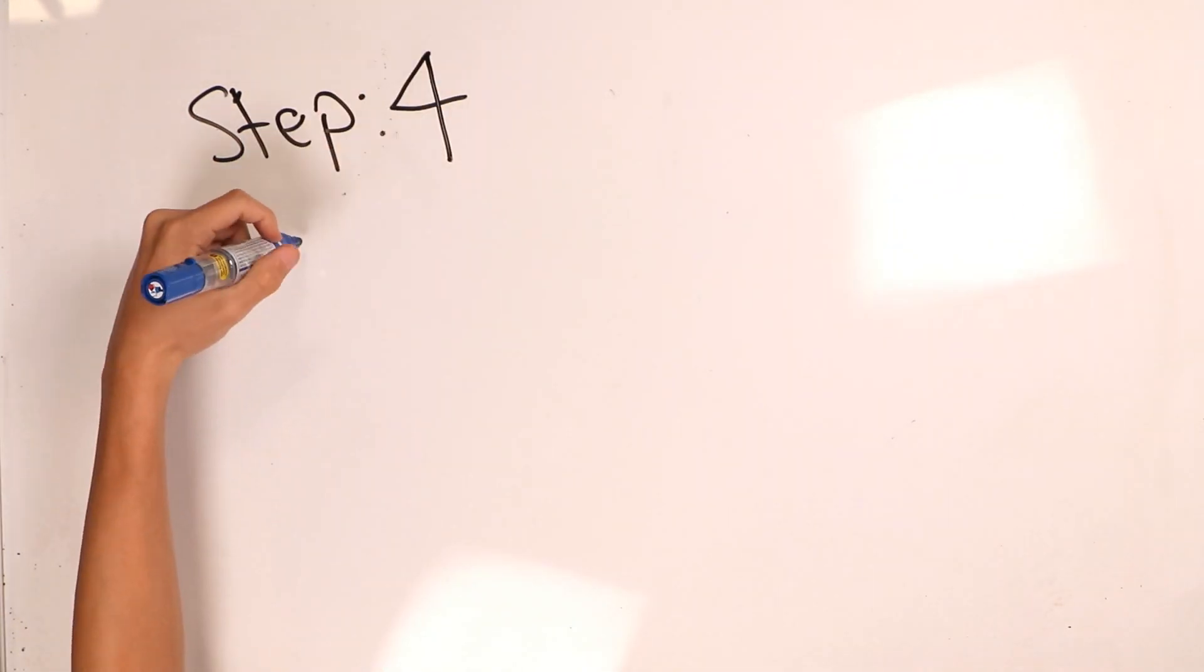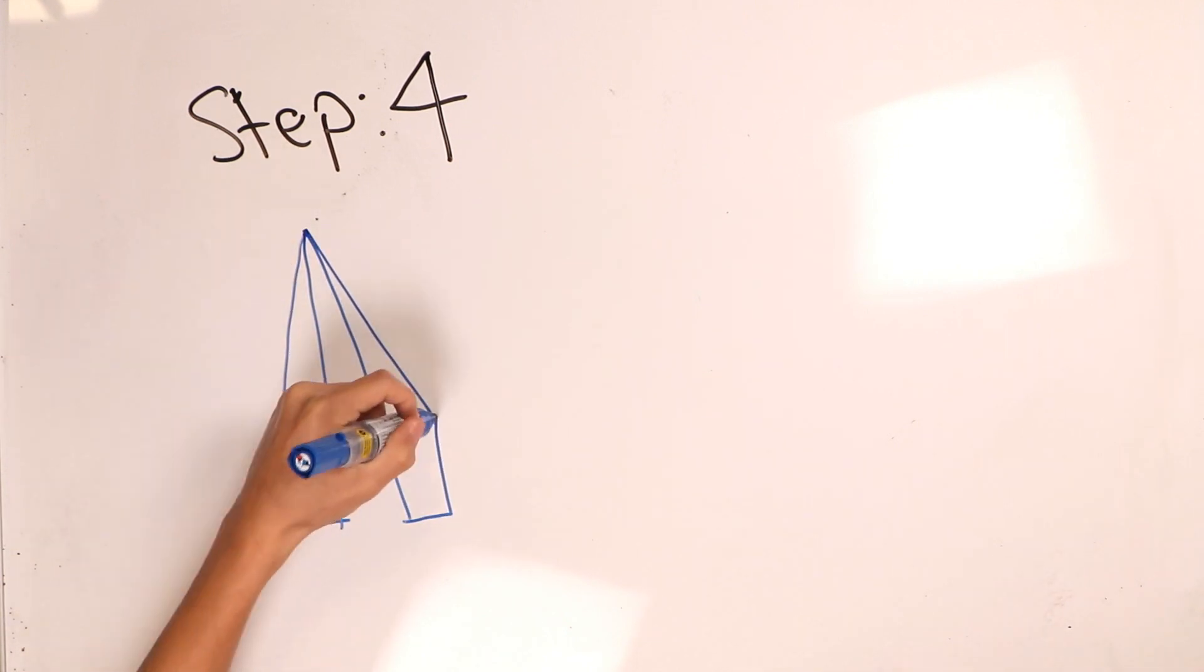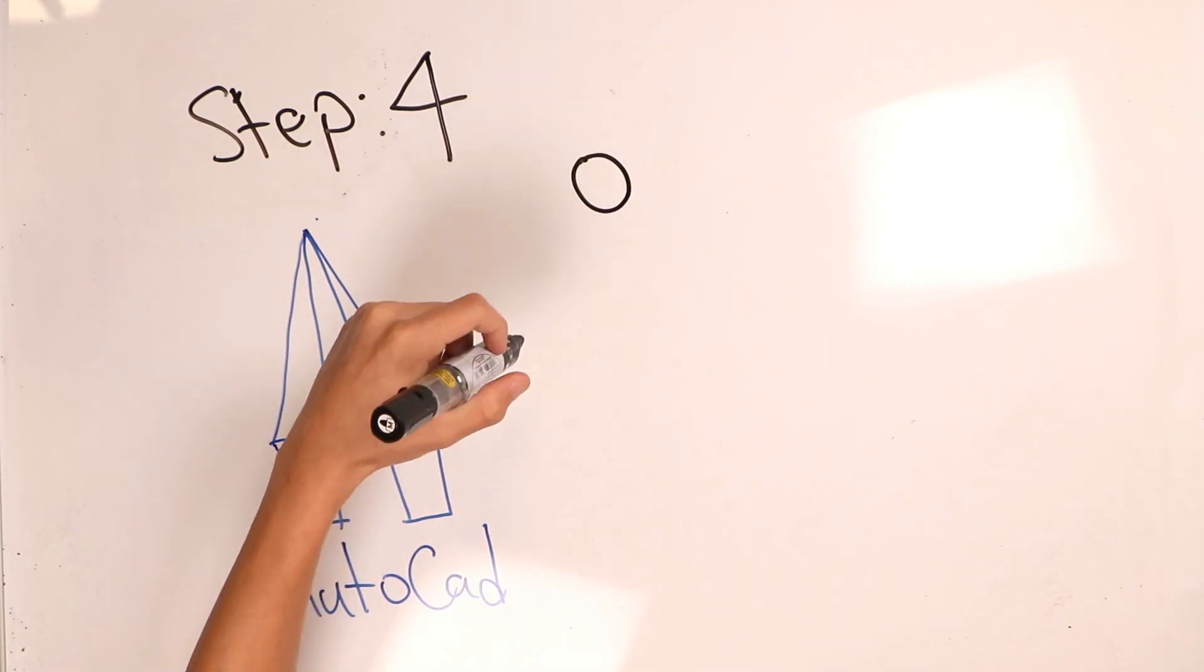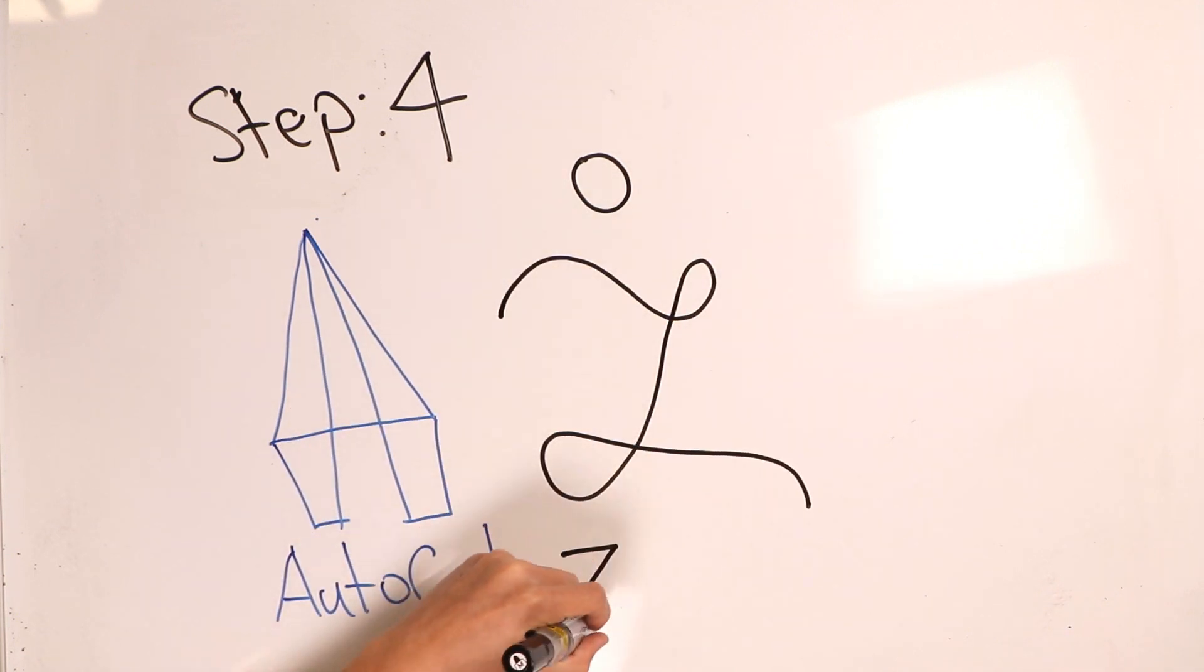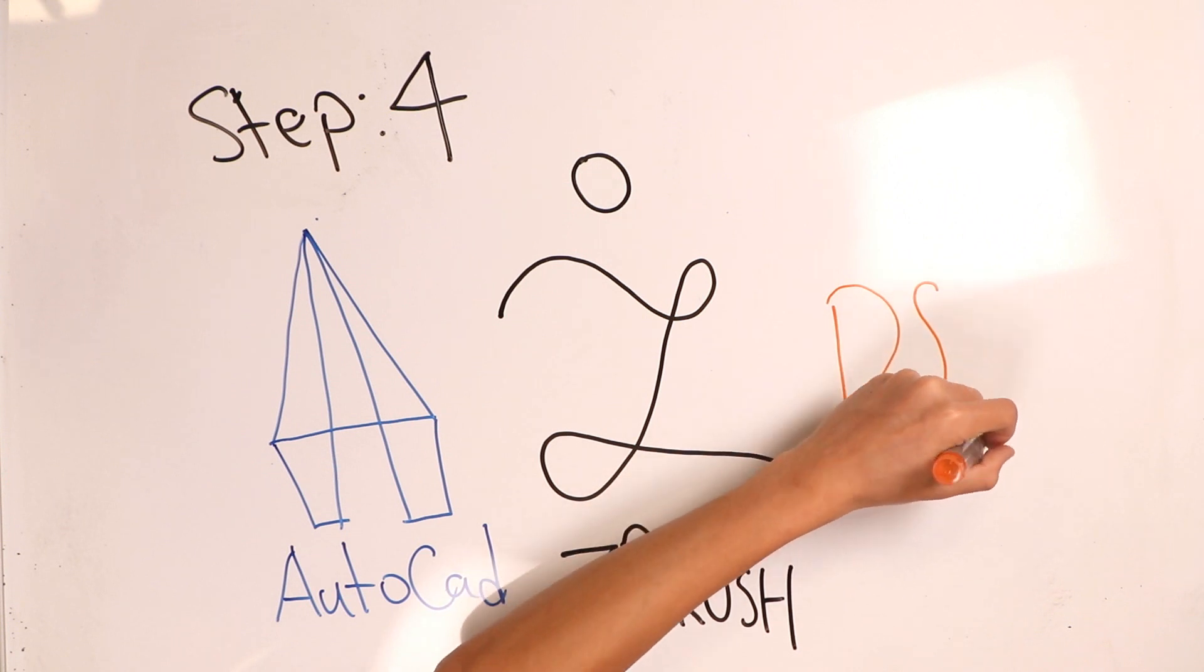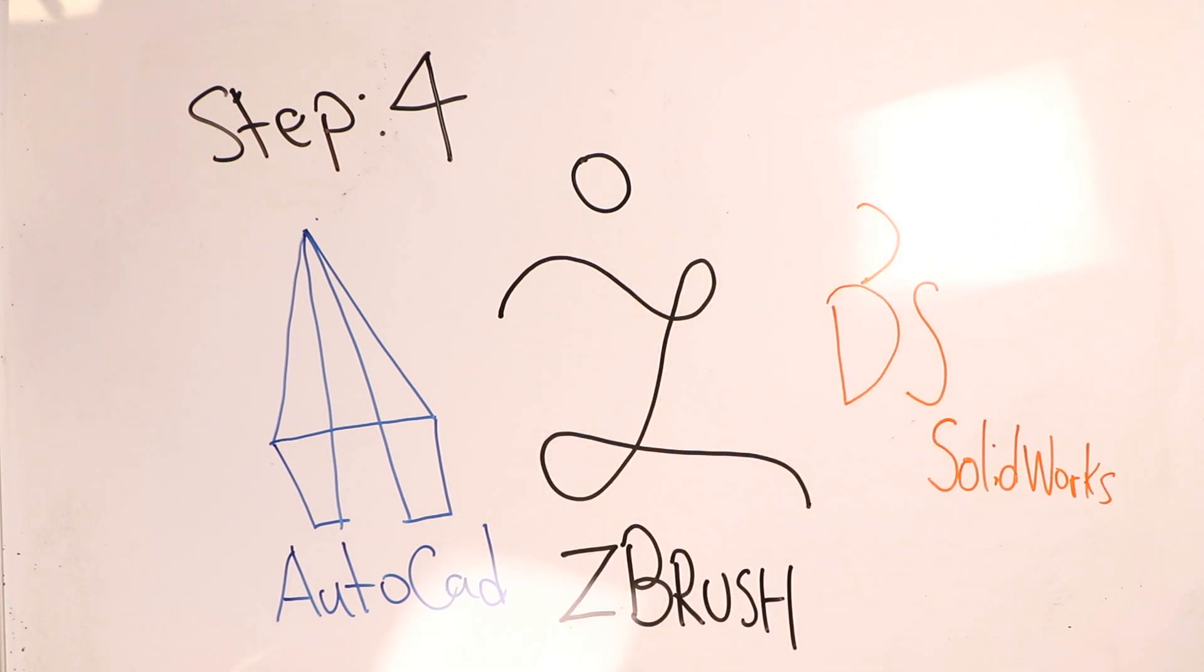What comes after 3? Well, that's the next step. Step 4! Design! Like what the name means, it is to design the product using a software before design testing. Some design softwares to aid in your 3D printing are SolidWorks, AutoCAD, and ZBrush.